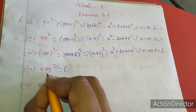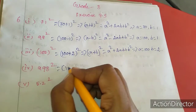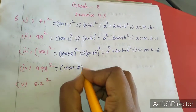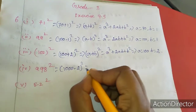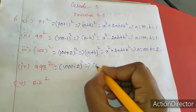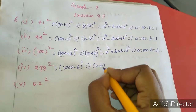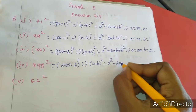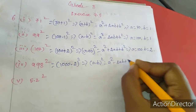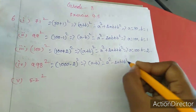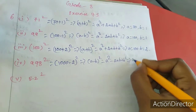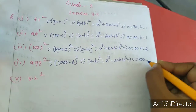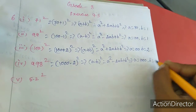The next sum is 998 squared. We write it as 1000 minus 2, the whole square, using the a minus b whole square formula. Here a equals 1000 and b equals 2.